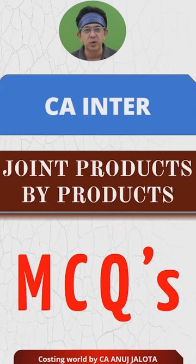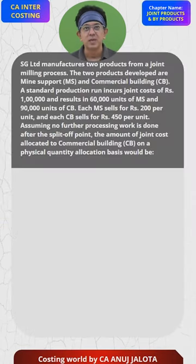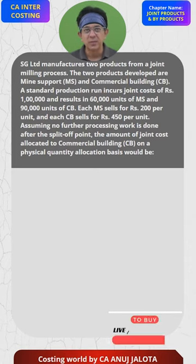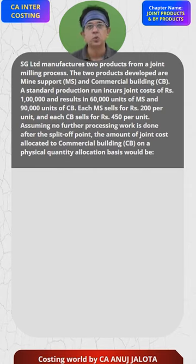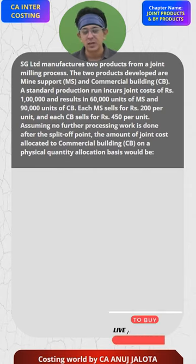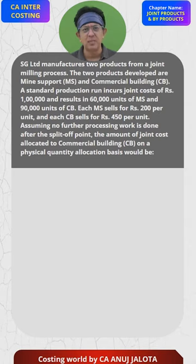CA Inter Joint Products and By-Products MCQs. SG Ltd. manufactures two products from a joint milling process. The two products developed are Mine Support (MS) and Commercial Building (CB).